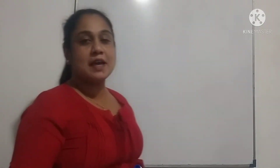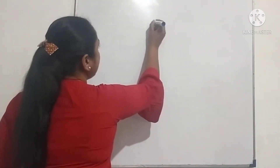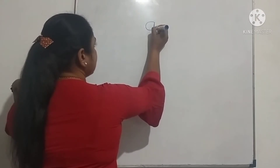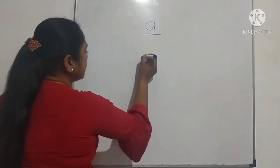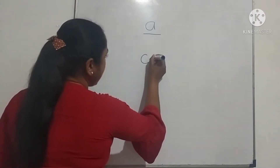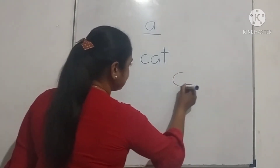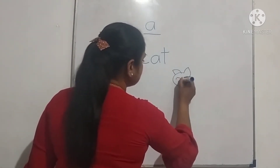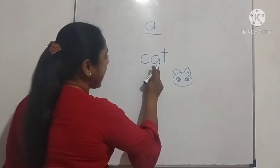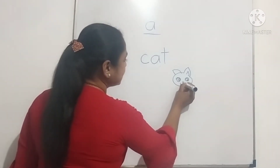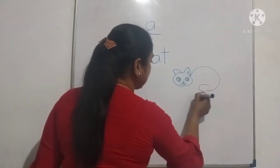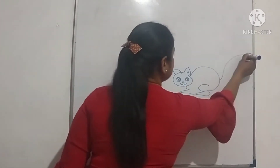Now, how do we make three-letter words using vowels? Look at the word. What is this one? A. This is A. K, A, T — Cat. Who is this? Cat. K, A, T — Cat. Your cute cat. I think it's your friend. Cat.